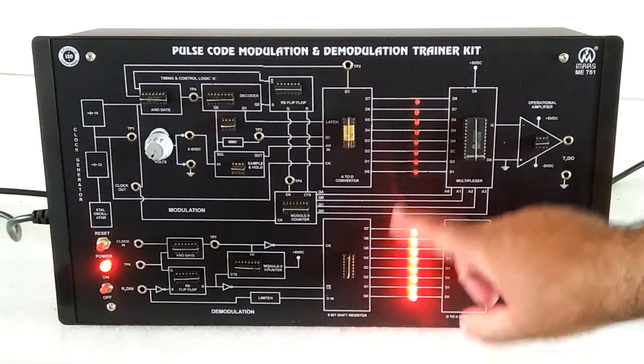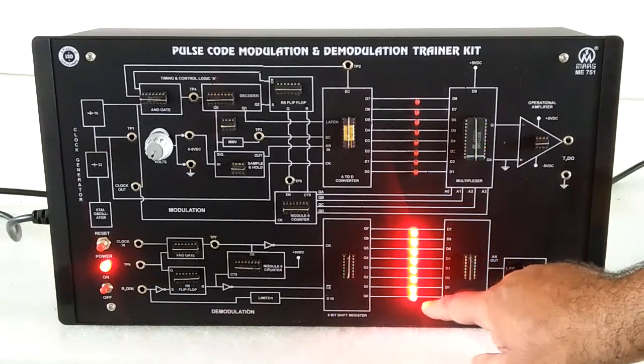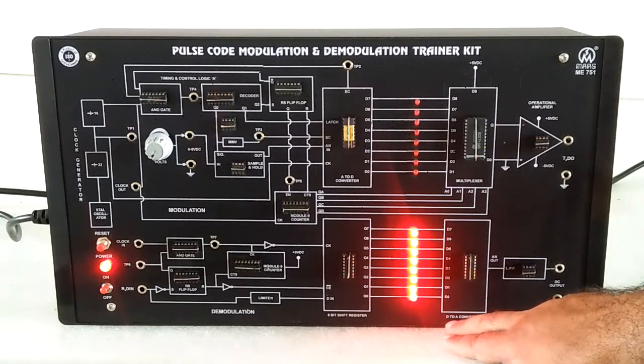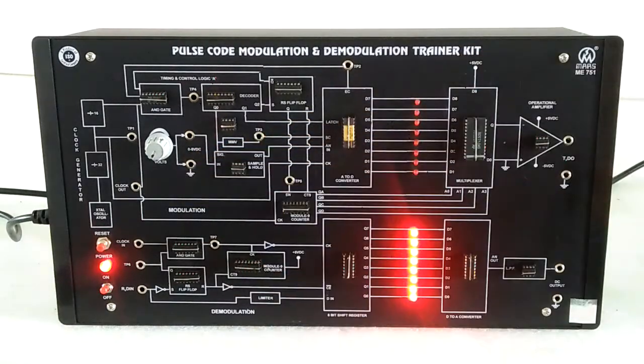The same output belongs to modulation, which we can see with the help of LEDs. And after that converter, we get the same DC output level which we give in the modulation.